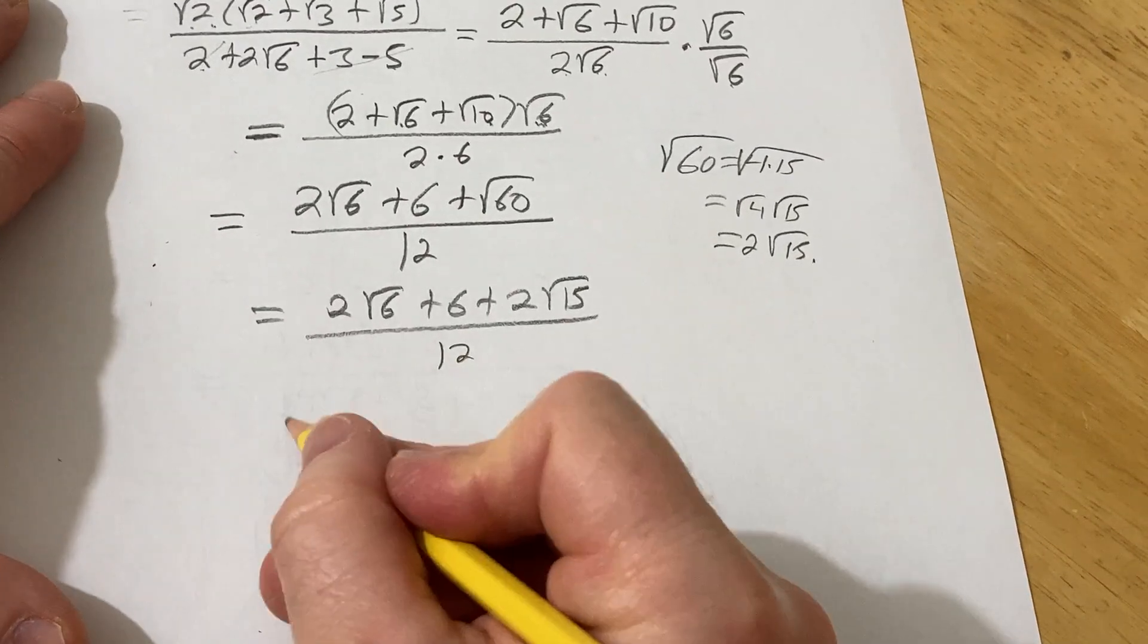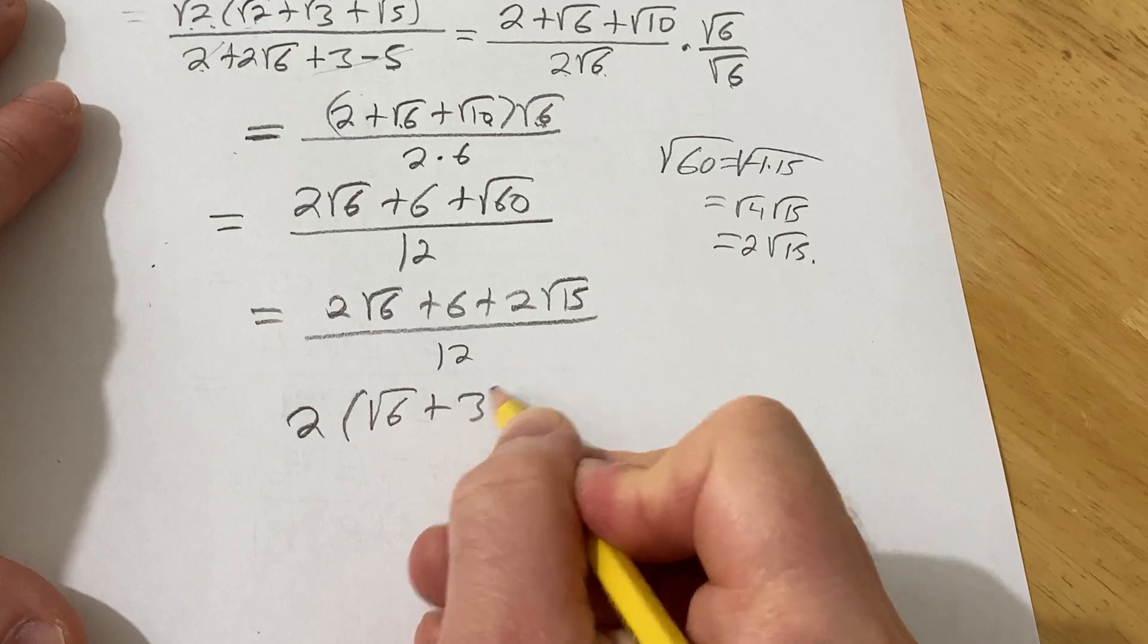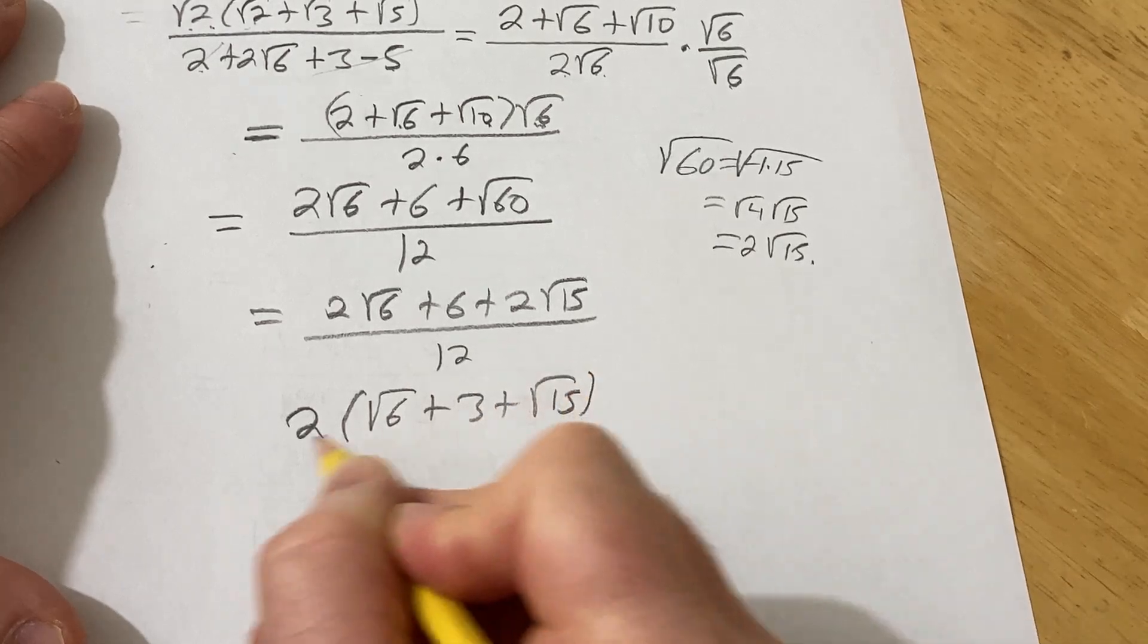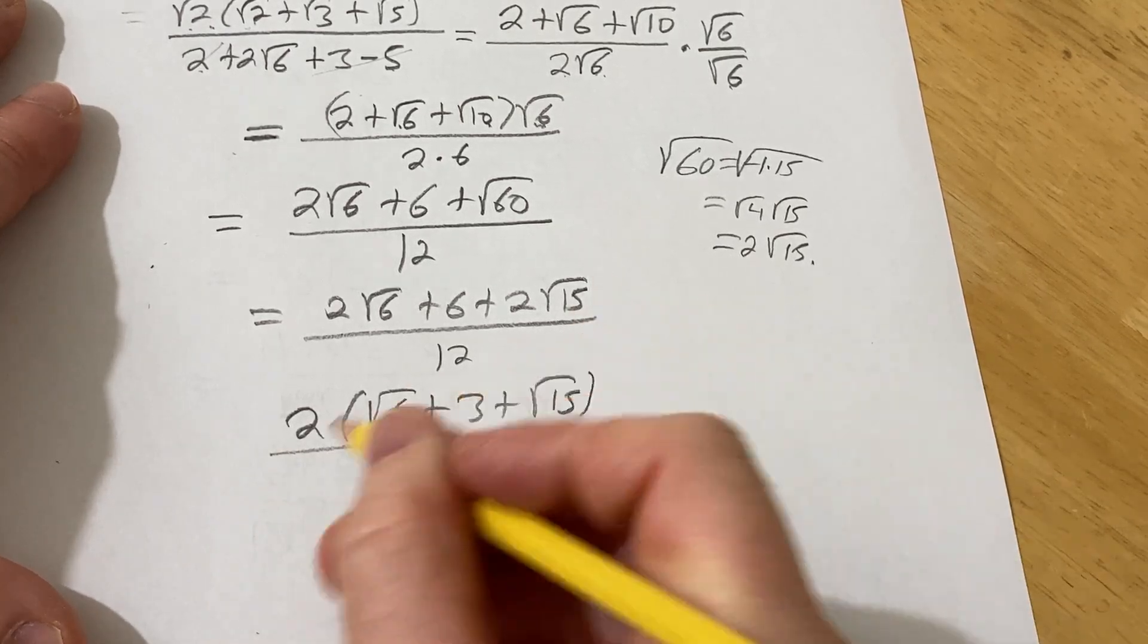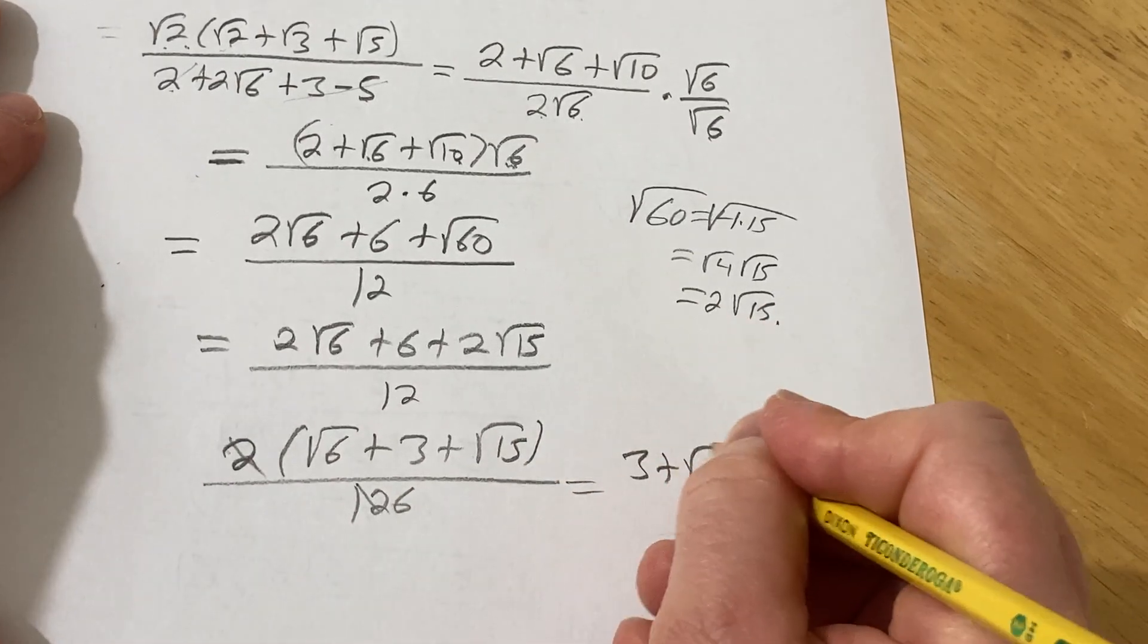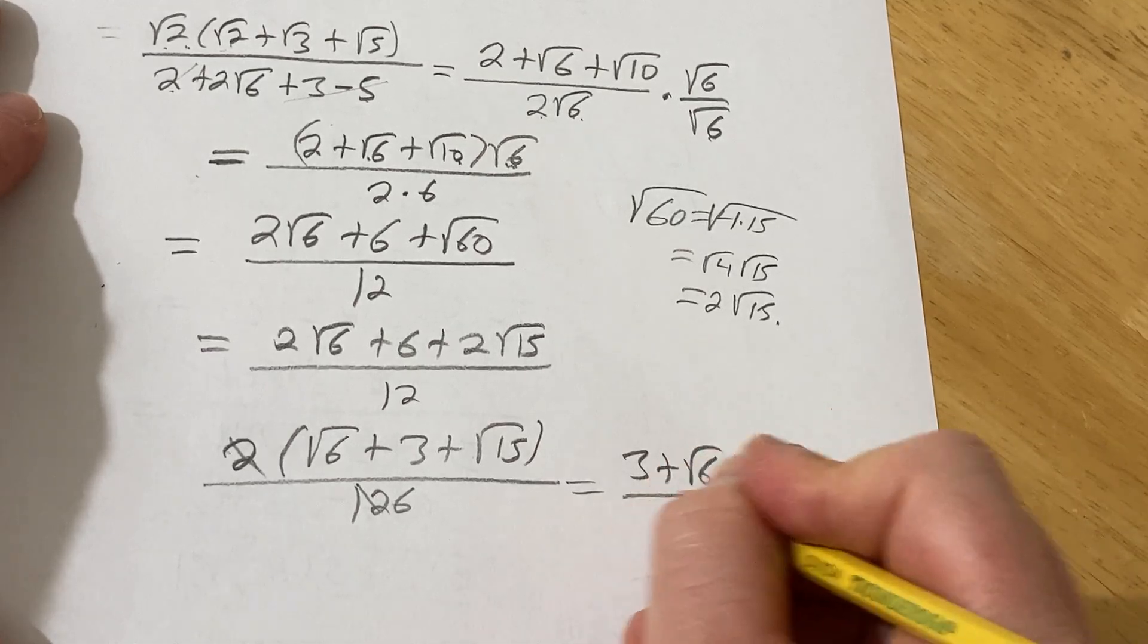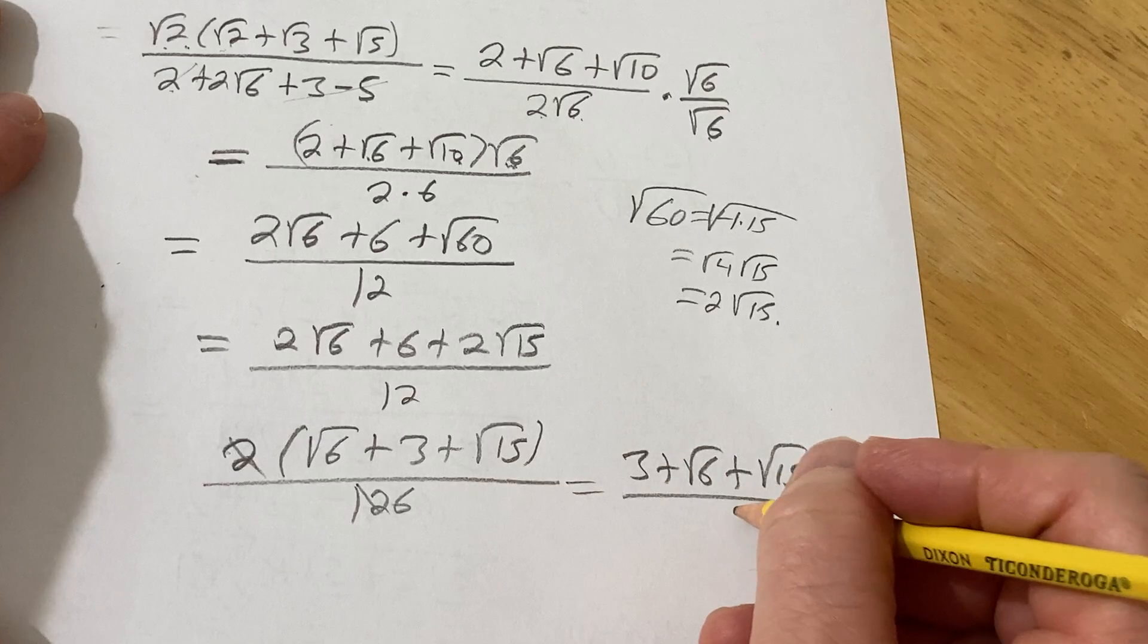You can pull out a 2 now in the numerator. So it's going to be square root of 6 plus 3 plus square root of 15 over 12. And now this cancels and gives you a 6. So this is going to be 3 plus root 6 plus root 15 over, and it's over 6.